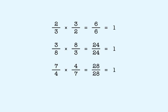Notice in all of these examples, the numerator of the first factor is the denominator of the second factor, and the denominator of the first factor is the numerator of the second factor. Any two numbers that have these properties will always have a product of one, since we are multiplying the same two numbers to get both the numerator and the denominator.